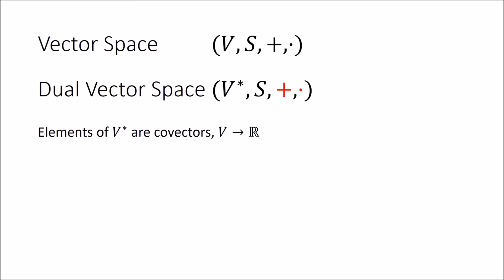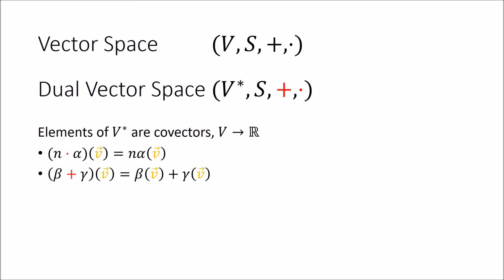The elements of V star are covectors, which are functions that go from V to the real numbers. The new scaling rule says that we can scale a covector by some number N just by applying the covector and then scaling the result by N. The addition rule says that we can add covectors by applying each one to the vector and then adding the results. The adding and scaling rules for these two vector spaces are different.